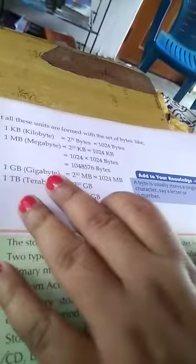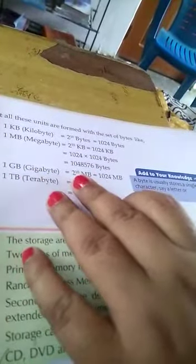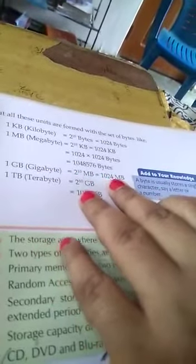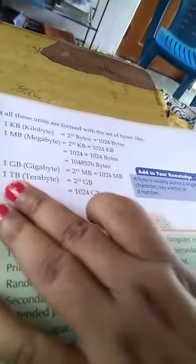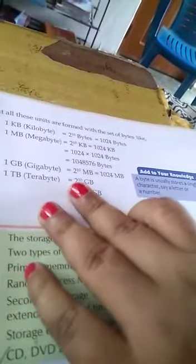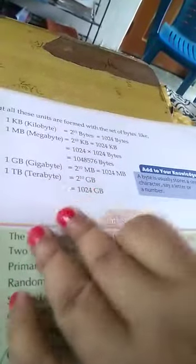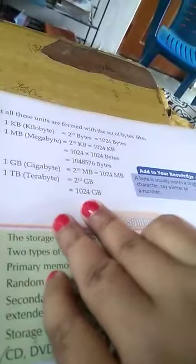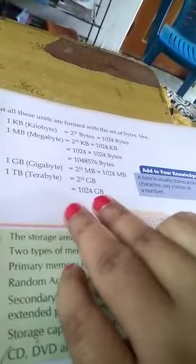1 GB (gigabyte) is equal to 2 to the power 10 MB, which is equal to 1024 MB. 1 TB (terabyte) is equal to 2 to the power 10 GB, which is equal to 1024 GB.